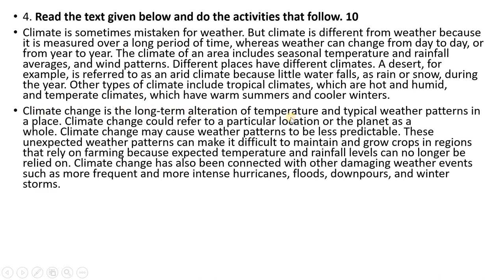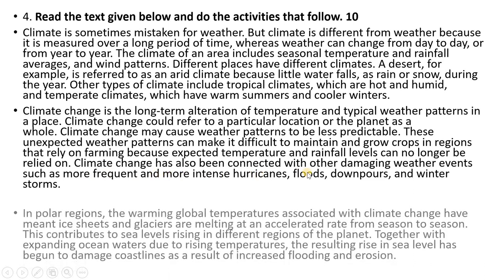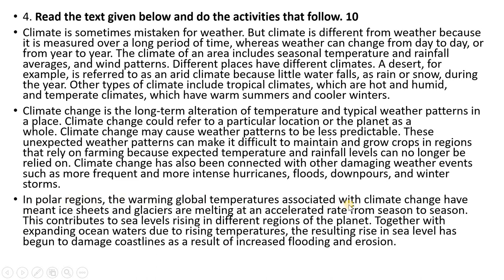Climate change is the long-term alteration of temperature and typical weather patterns in a place. Climate change could refer to a particular location or the whole planet. Climate change may cause weather patterns to be less predictable. These unexpected weather patterns can make it difficult to maintain and grow crops in regions that rely on farming, because expected temperature and rainfall levels can no longer be relied on. Climate change has also been connected with damaging weather patterns such as more frequent and intense hurricanes, floods, downpours, and winter storms. In polar regions, warming global temperatures associated with climate change have meant that ice sheets and glaciers are melting at an accelerated rate. This contributes to sea levels rising, and together with expanding ocean waters due to rising temperatures, the resulting rise in sea level has begun to damage coastlines as a result of increased flooding and erosion.